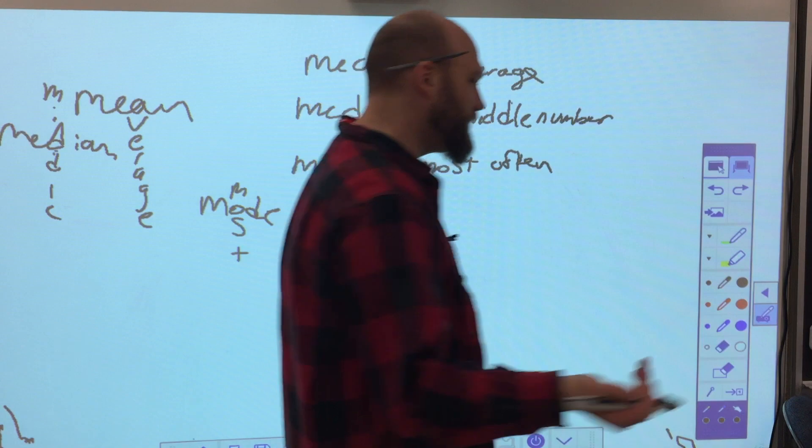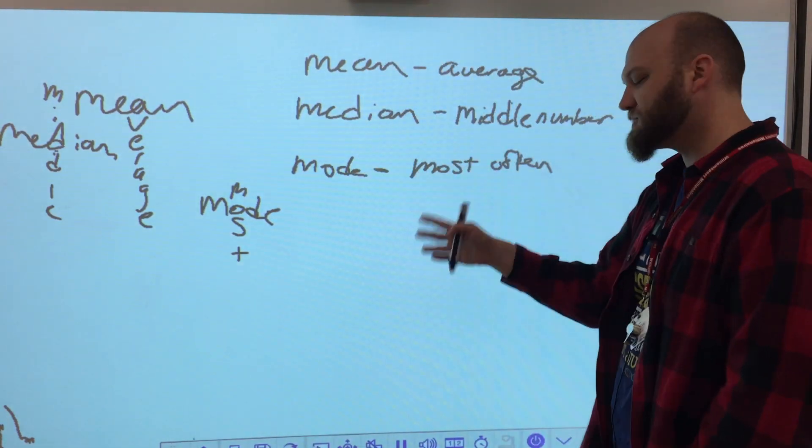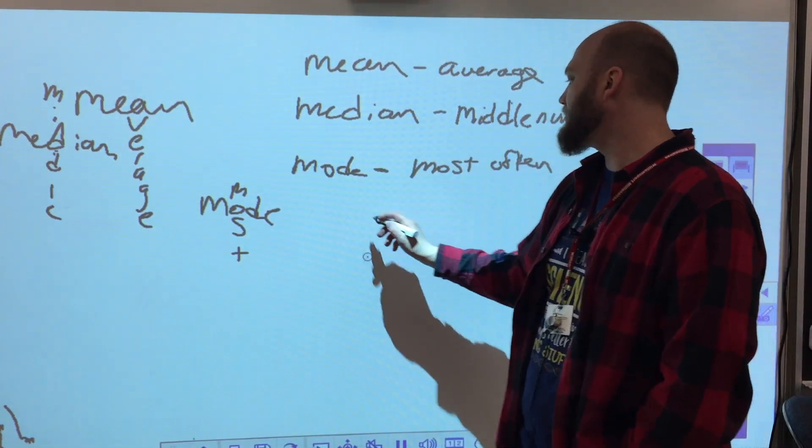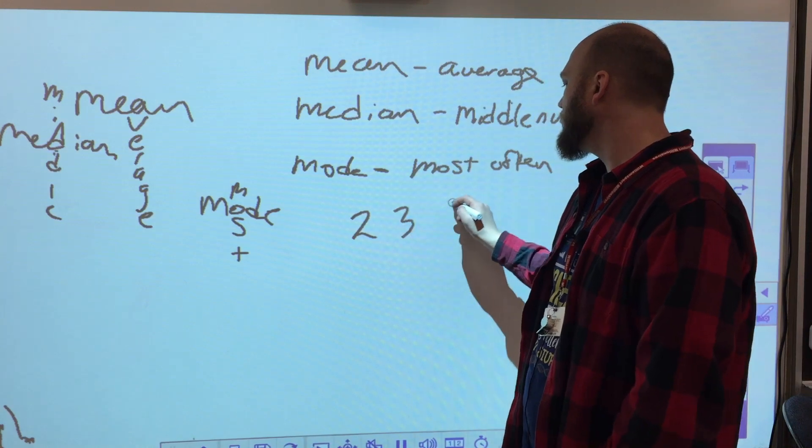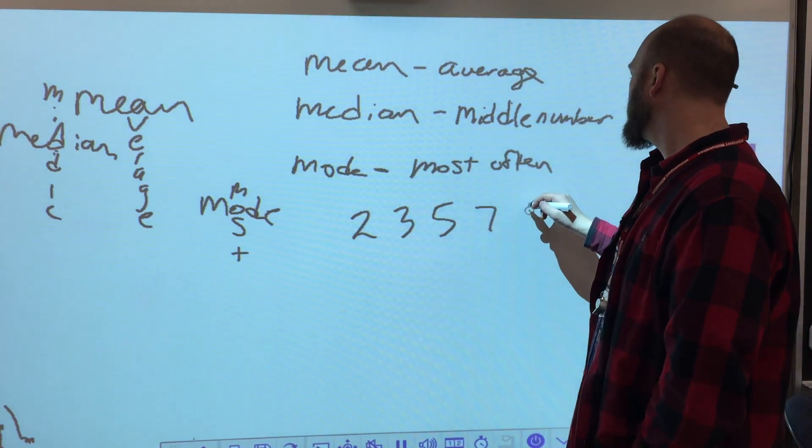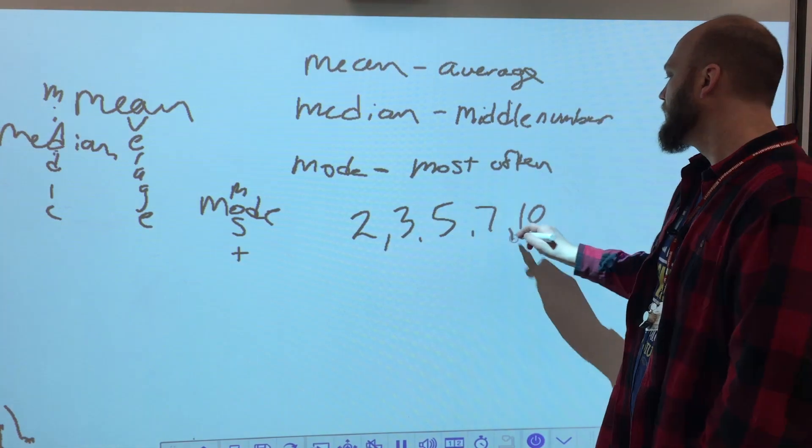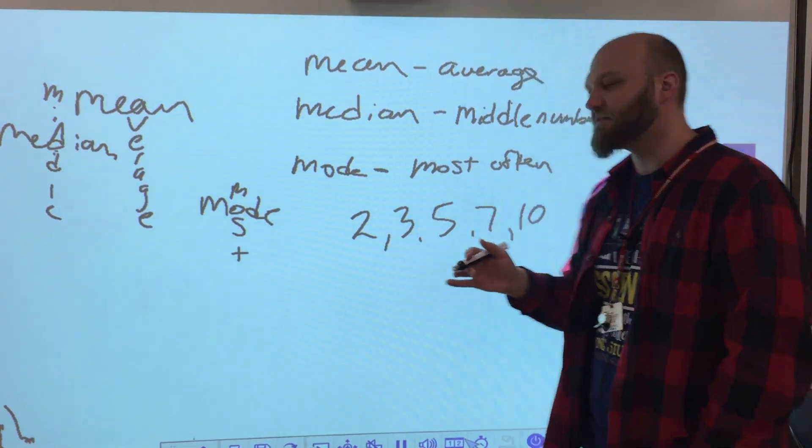If I were looking at these, I'm going to leave this mess up here so that you can follow along with me. Let's take a look at 2, 3, 5, 7, and 10. So I have here five different numbers.